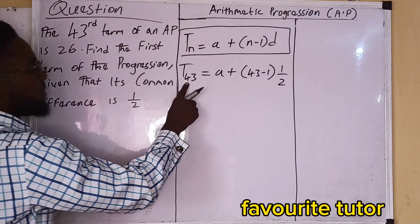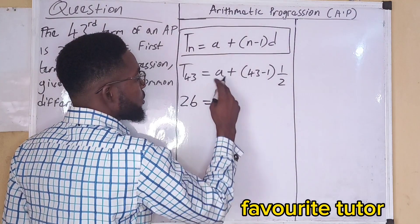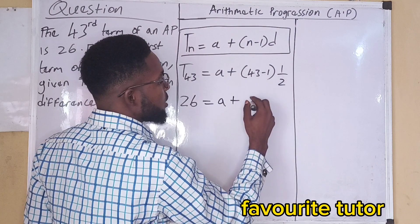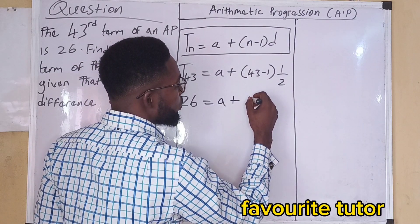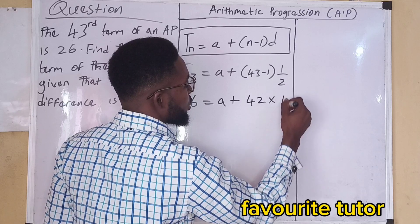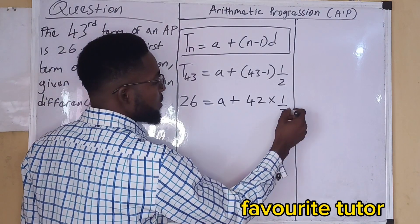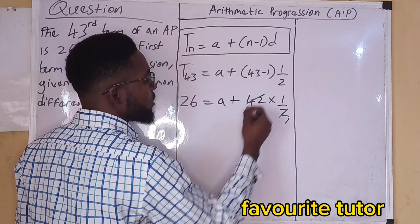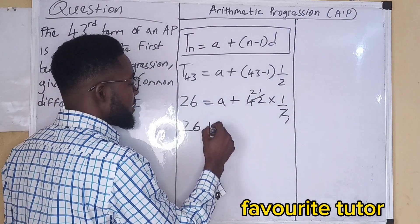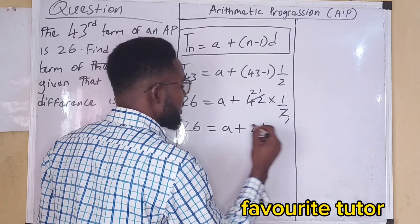So the 43rd term is 26. So this gives us 26 equals to A plus 43 minus 1, which is 42. So we have 42 times 1 over 2. The 2 cancels, giving us 21. So I have 26 equals to A plus 21.